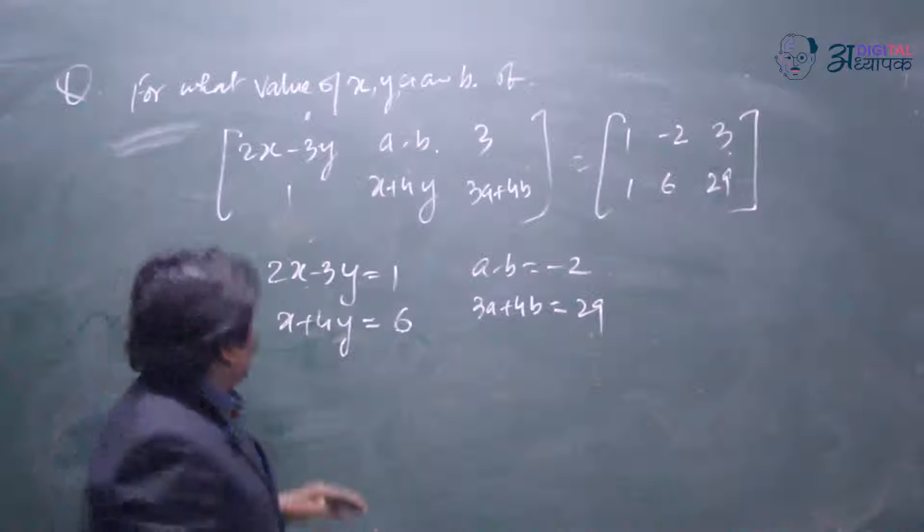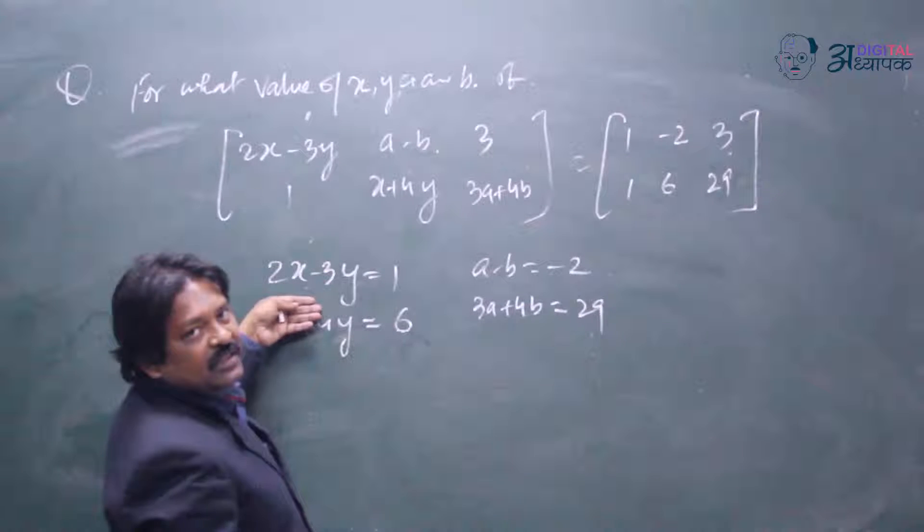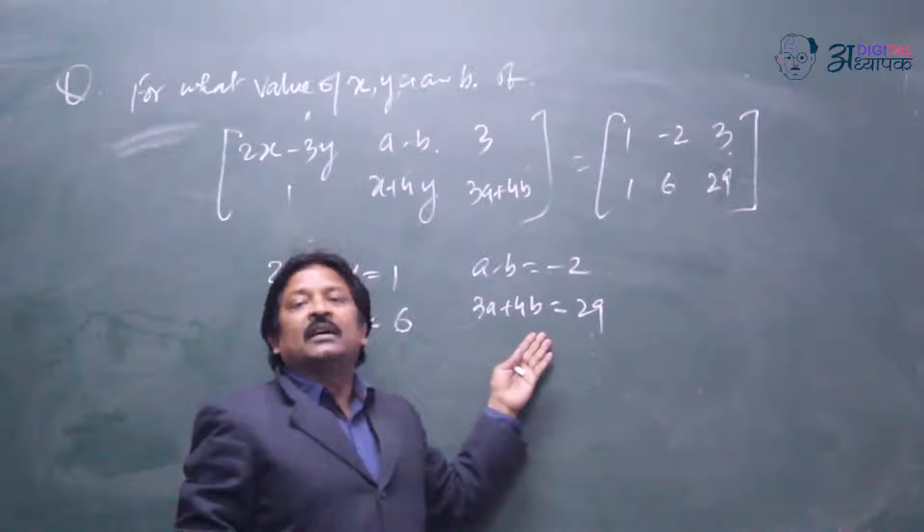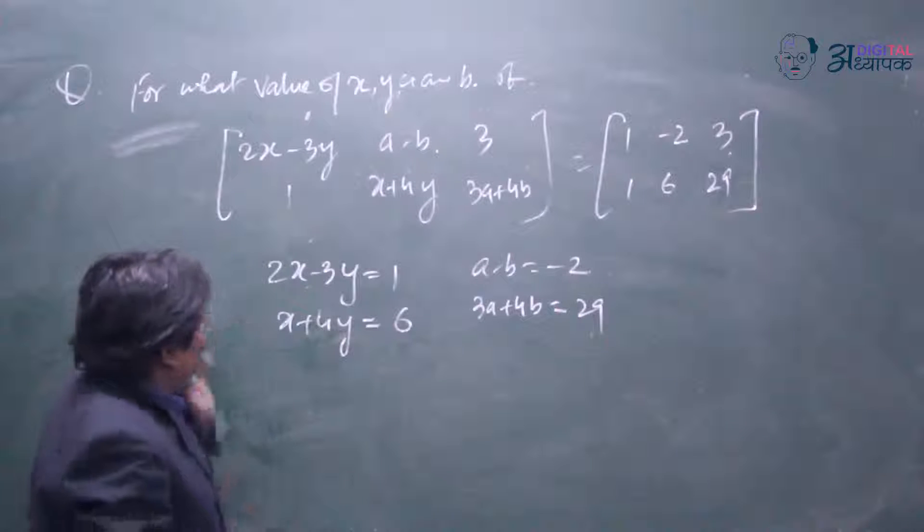Then if we solve these equations simultaneously we get the value of x and y, and from these we get the value of a and b. So how will we solve the question?